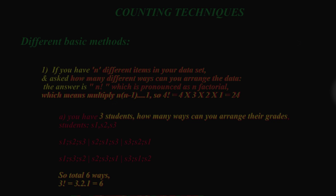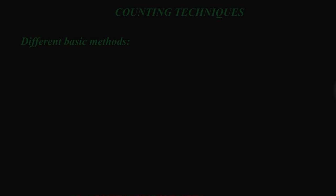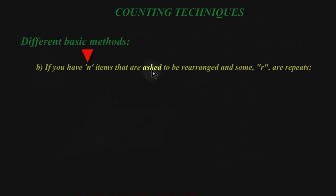What happens if there's a repeat in your list? You're trying to arrange n different items in your data set, but some of the n's are repeated. Well, if they are repeated, and let's say n is still the total number of items or observations, and r is the number of repeats, you're going to do a division of the repeats.